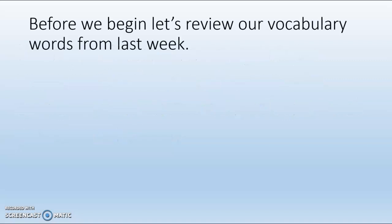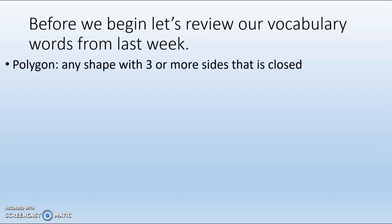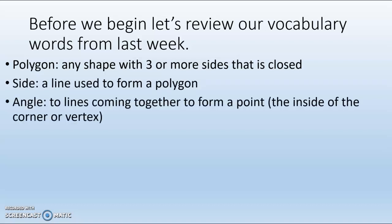Before we begin let's review our vocabulary words from last week. We had a polygon which is any shape with three or more sides that's closed. A side is the line that's used to form the polygon. An angle are lines that come together to form a point, the inside of the corner or the vertex.